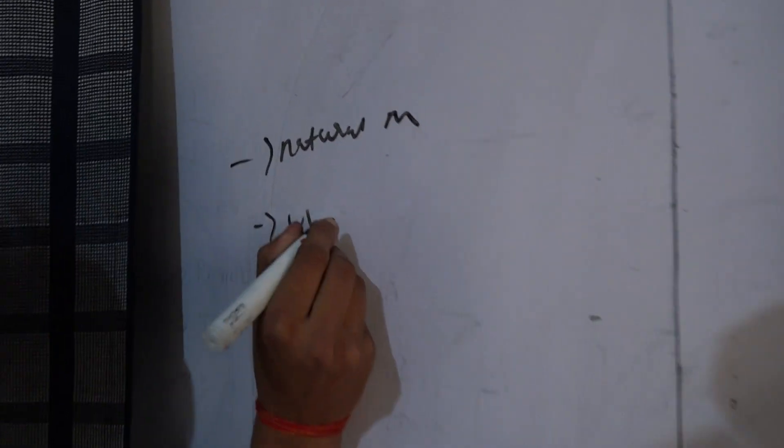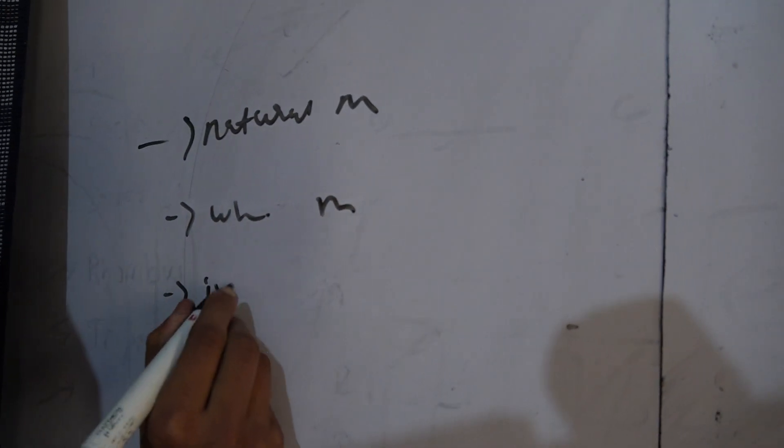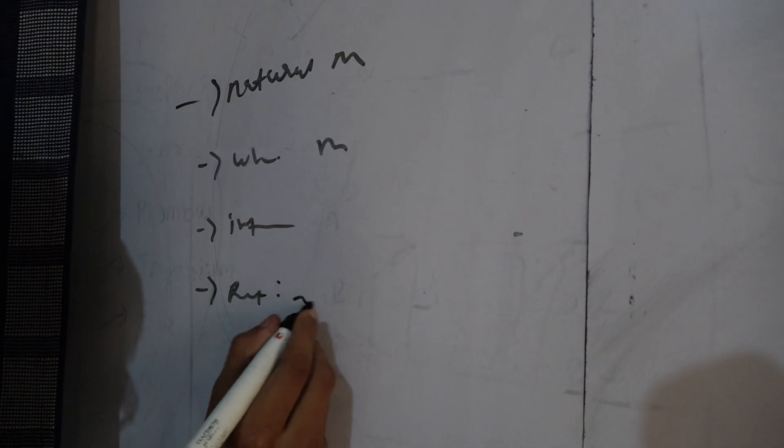natural number, whole number, integers, and next one is rational number.